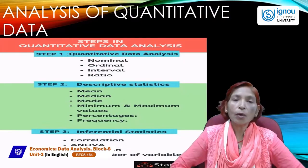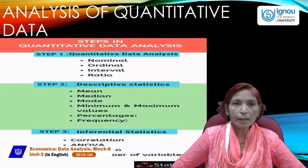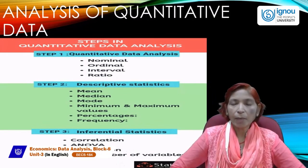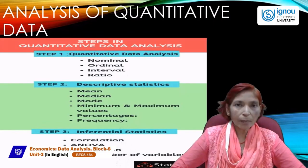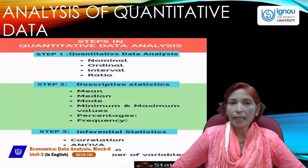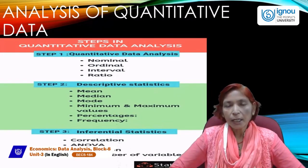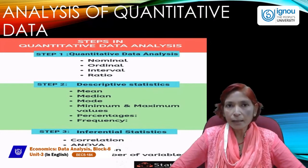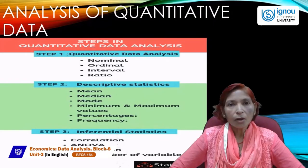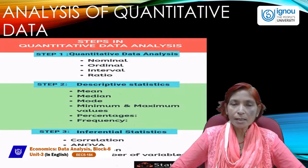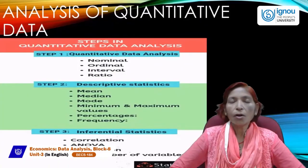In inferential statistics, correlation explains the relationship between two variables. For example, in microeconomics, the law of demand tells us there is a negative relationship between price and quantity demanded. Price is the independent variable and quantity is the dependent variable. If price is higher, demand will be lower; if price is lower, demand will be higher. This is the negative or inverse relationship explained by Marshall.